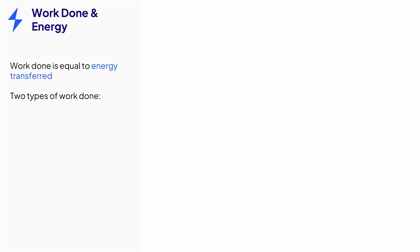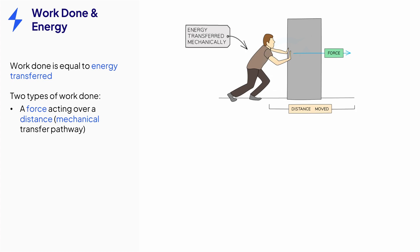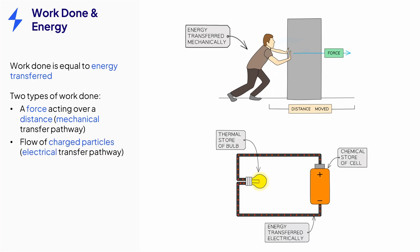There are two different types of work. Work done by forces over a distance - this is mechanical work, energy is transferred mechanically. And work done by the flow of charged particles - electrical work, energy is transferred electrically.